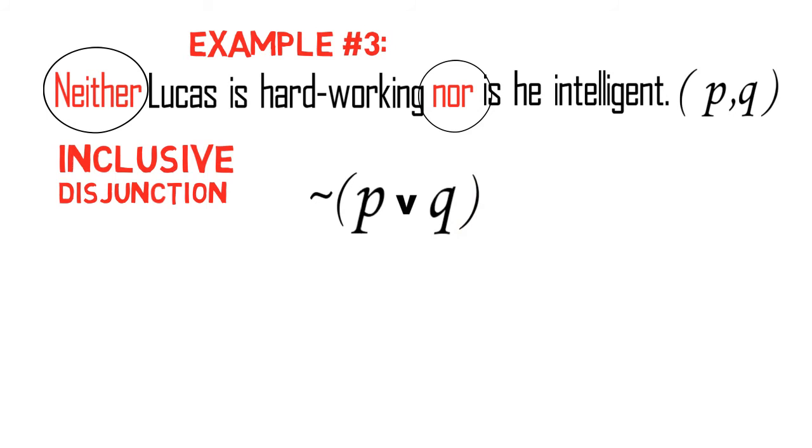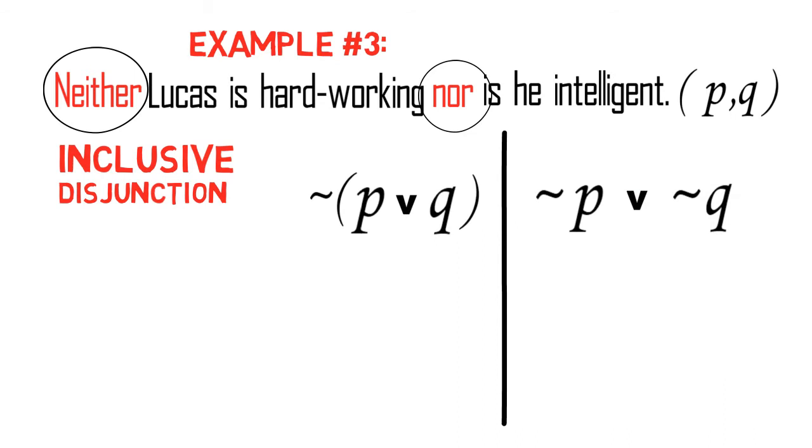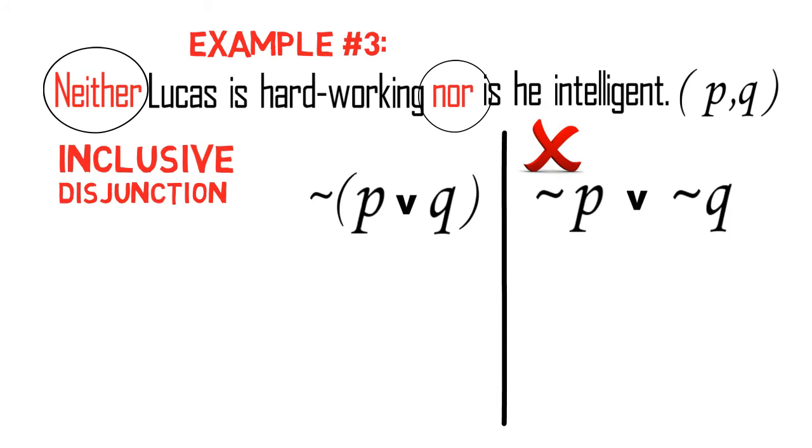Now, please note that ~(P v Q) is not the same with ~P v ~Q. And ~P v ~Q is not the proper symbol of this example because the words neither nor suggest that the proposition has to be completely negated.